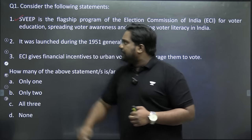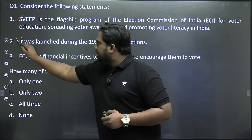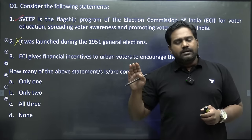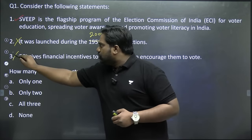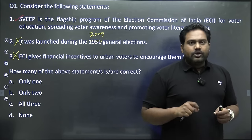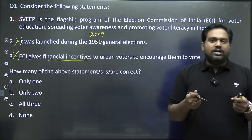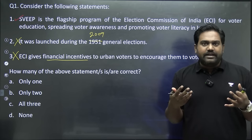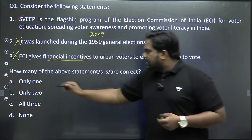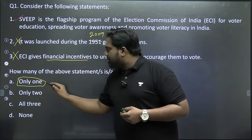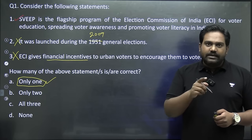Based on this, we can identify which statements are correct. Statement one is definitely correct. However, statement two is incorrect — SWEEP was not launched in 1951; it was launched in 2009. Statement three is also incorrect because the Election Commission does not give any financial incentive or bribe for you to vote; it only spreads literacy and awareness in an ethical manner. So two and three are incorrect, and the correct answer is option A — only one statement is correct.